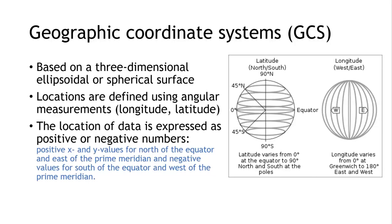The location of data is expressed as positive or negative numbers. For example, positive x and y values for north of the equator and east of the prime meridian. The negative values for south of the equator and west of the prime meridian.